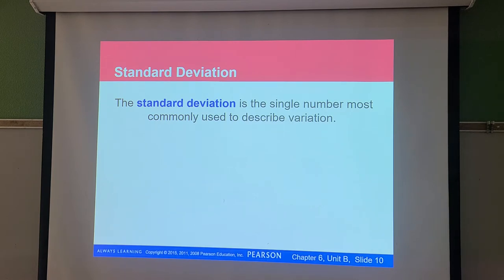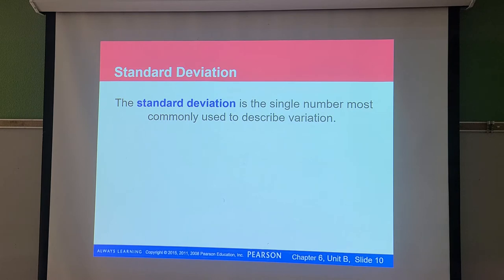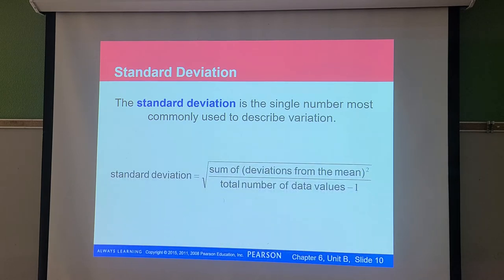A lot of the homework problems this week have multiple steps — they'll ask for the five-number summary, the mean, the median, and the standard deviation. Since we didn't learn yet how to calculate standard deviation, you might have been stuck. This is probably the most common statistical measure — when people talk statistics, they'll use the standard deviation to describe variation in the dataset. For example: the average is 2.25 with a standard deviation of 0.6, or the average is 200 with a standard deviation of 50. That tells you how the data vary from the average.